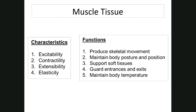Characteristic number one is excitability — the ability to conduct and respond to a stimulus. There are only two tissues that can do that: one is nervous tissue, and the one we're studying now is muscle tissue. Number two is contractility — the ability to shorten in length. Other tissues can't shorten.